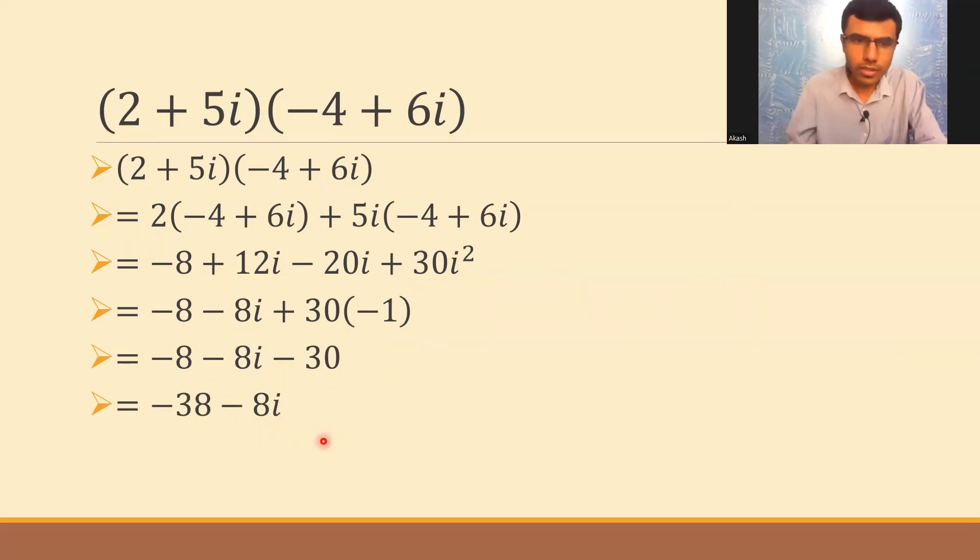Now the conjugate of this is nothing but minus 38 plus 8i. The conjugate of a plus ib is a minus ib and the conjugate of a minus ib is a plus ib.